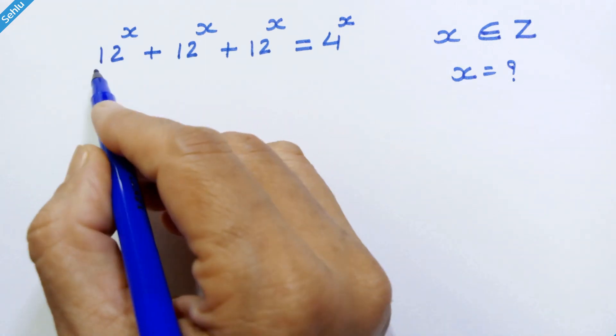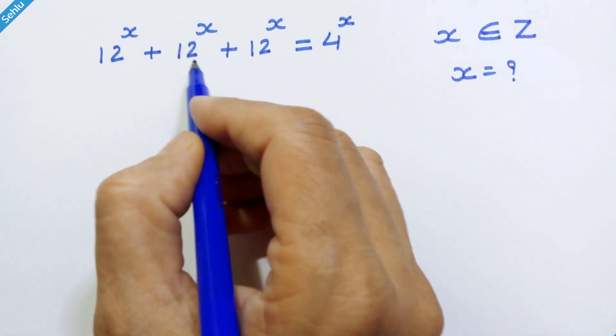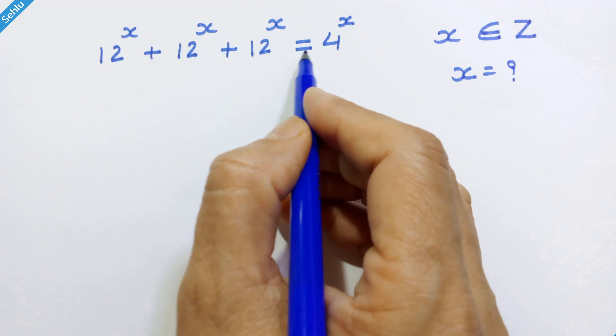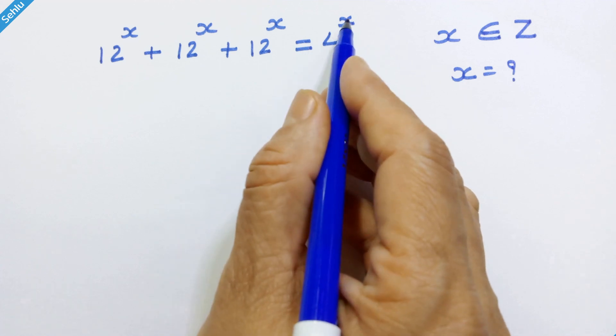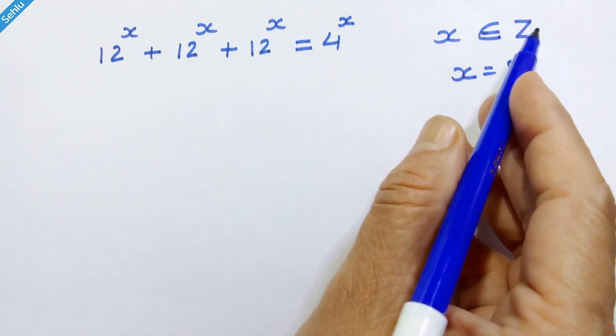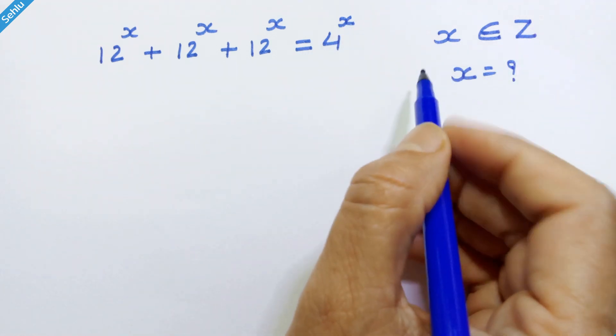Hello friends. Here we have 12 raised to x plus 12 raised to x plus 12 raised to x is equal to 4 raised to x. x is an integer and we will find out x.